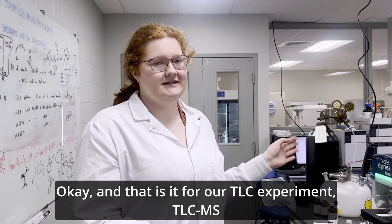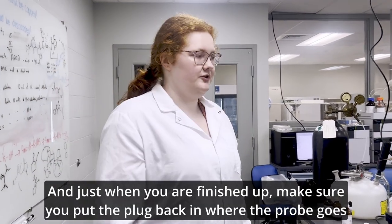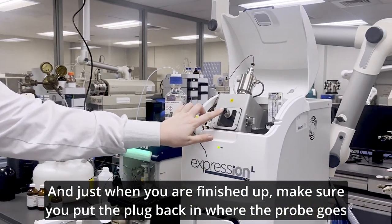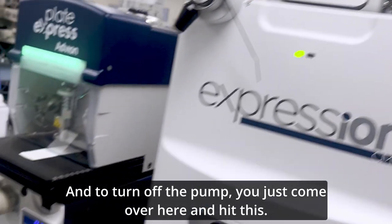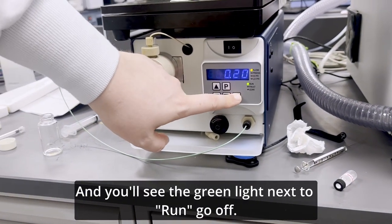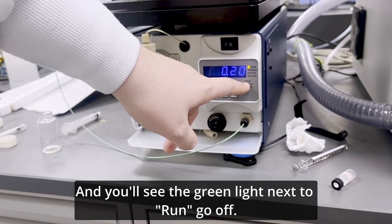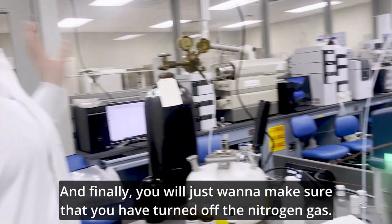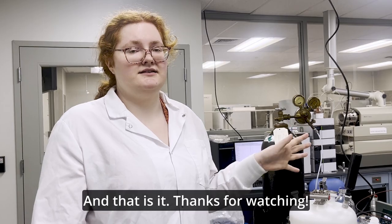Okay, and that is it for our TLC experiment, TLC-MS. And just when you are finished up, make sure you put the plug back in where the probe goes. And to turn off the pump, you just come over here and hit this, and you'll see the green light next to run go off. And finally, you will just want to make sure that you have turned off the nitrogen gas. And that is it. Thanks for watching.